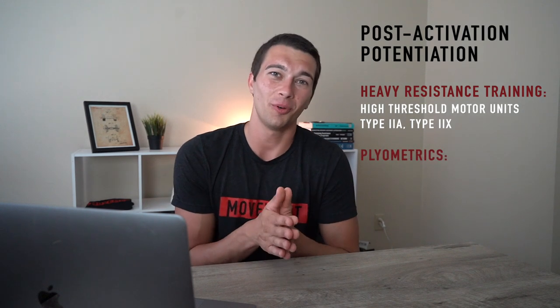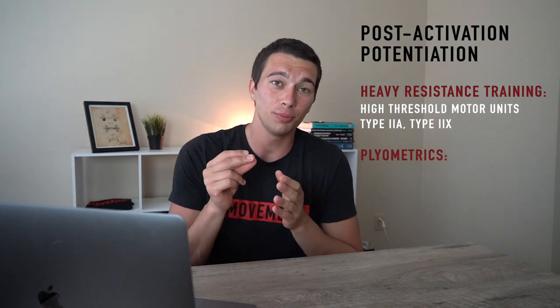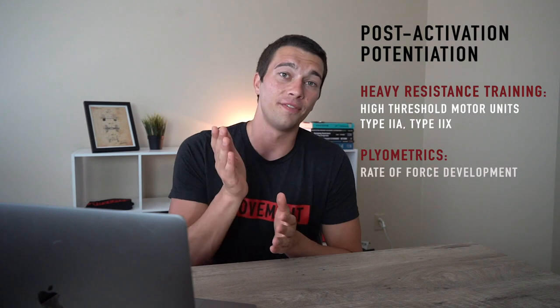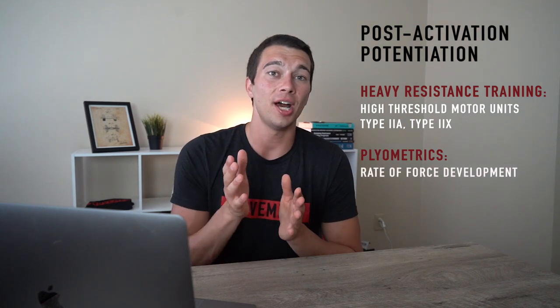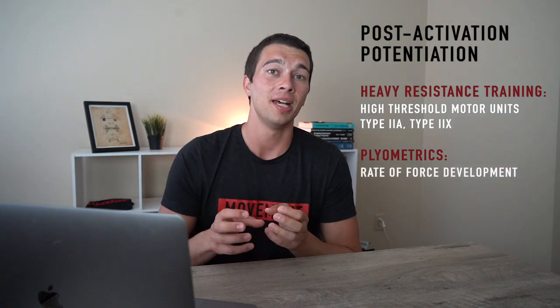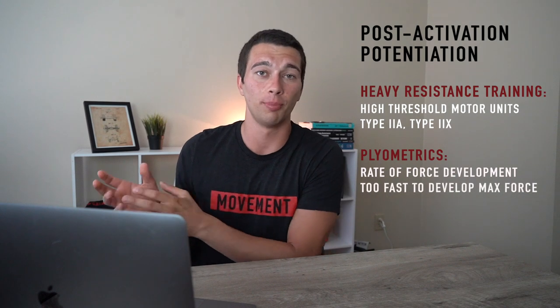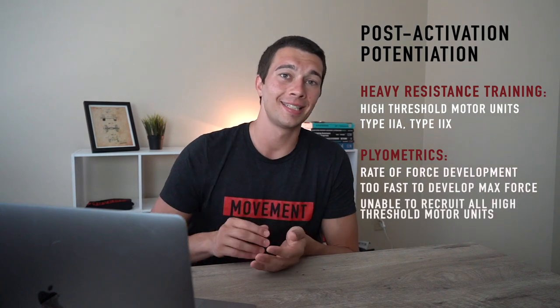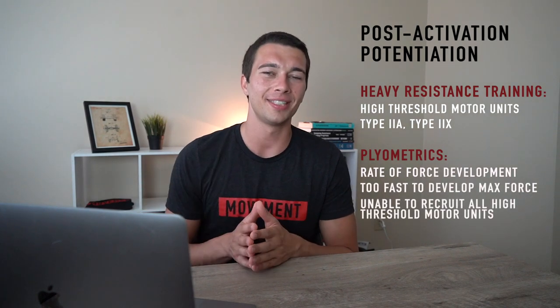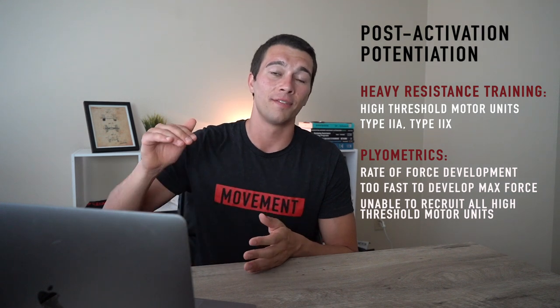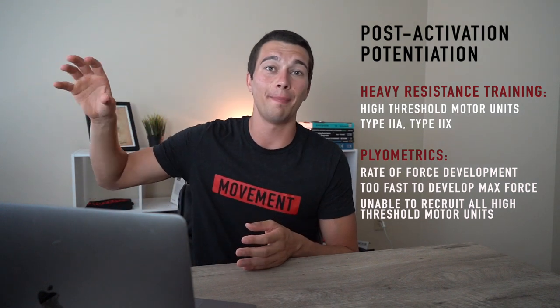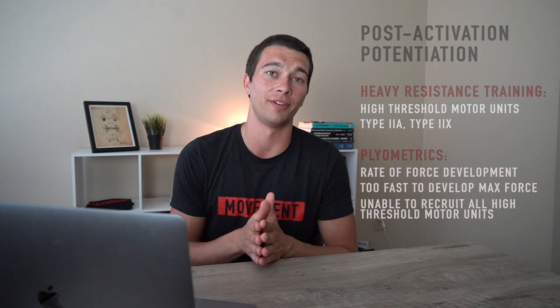When we're doing plyometrics — as you'll know from my rate of force development video — those movements are really fast. Rate of force development is key, and we're not necessarily having enough time to recruit all of our high threshold motor units, because it takes 0.3, 0.4, or 0.5 seconds to actually get all the way from summating action potentials up to maximal force production through our muscle fibers. So we understand the neurophysiology behind heavy resistance training and fast plyometric training.